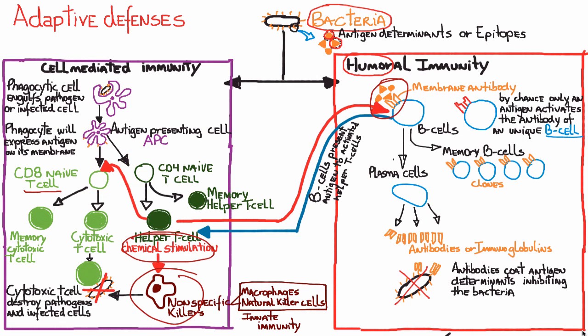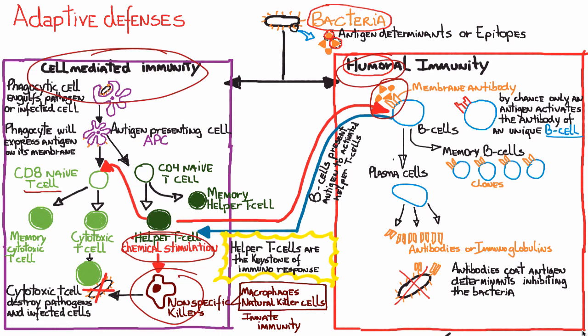As B cells present antigens to helper T cells, they create a bridge between humoral immunity and cell-mediated immunity. It is safe to say that helper T cells are the keystone of the immune response. Without them, you have no connection between the two branches and no co-stimulation to trigger either pathway. This is essentially where the HIV virus finds its home — HIV kills the helper T cells and destroys this entire network of interactions.